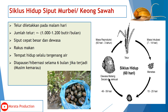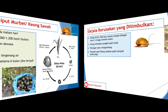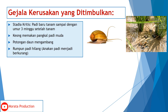Siklus hidup total Keong yaitu selama 60 hari. Pertama, keong meletakkan telur di pelepah atau daun padi dengan masa inkubasi 7 sampai 14 hari, kemudian menetas. Setelah 15 sampai 25 hari berubah menjadi keong muda. Selanjutnya pada usia 49 sampai 59 hari keong muda berubah menjadi keong dewasa yang matang secara seksual. Masa reproduksi keong dewasa yaitu dari umur 2 bulan atau 60 hari sampai 3 tahun.